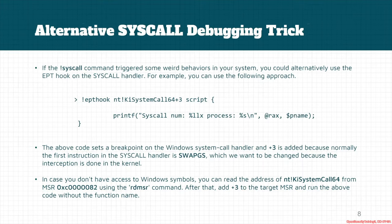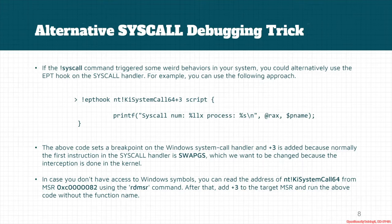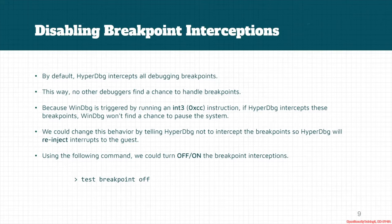Plus 3 is added because we're going to run past the swapgs instruction, since the interception is done in the kernel and after changing it the GS of the kernel is loaded. In case you don't have access to the Microsoft symbol server and don't know the address of KiSystemCall64, you can try to read MSR 0xC0000082 using the rdmsr command, and then add plus 3 to the result.